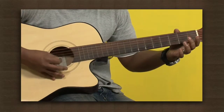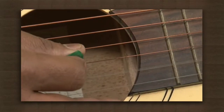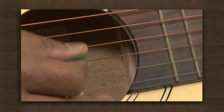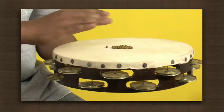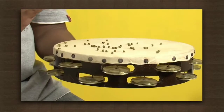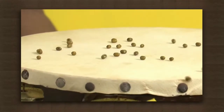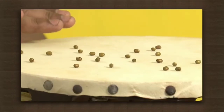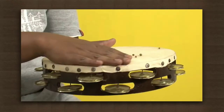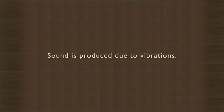Look at the string carefully. It looks hazy and it is moving back and forth, which means it is vibrating. So vibrations produce sound. Put some pulses on the frame drum and strike the surface of the drum where there are no pulses. You will see the pulses jump up as soon as you strike the drum. This is due to vibrations on the skin of the drum which lifts the pulses up. Pulses jump up only when the drum is struck and sound is also produced at the same instant. So sound is produced by the frame drum due to the vibration of its skin. Sound is produced due to vibrations in any object.